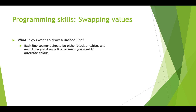So if we've got black and white stored in two different variables, we need to swap which one is in the variable we're using and put the other one in the variable that's just for storage. We define two drawing colors, and then every time we draw, we swap them.